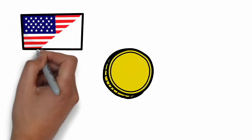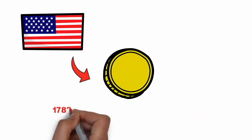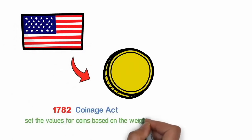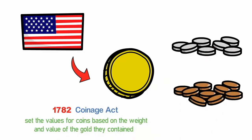In the US, the Constitution gave Congress the power to coin money. In 1792, the Coinage Act established the US Mint and set the values for coins based on the weight and value of the gold they contained. Other coins containing silver and copper were established too, but this isn't their party.